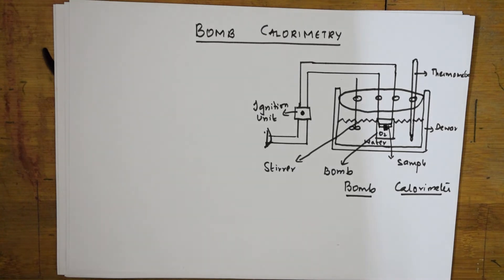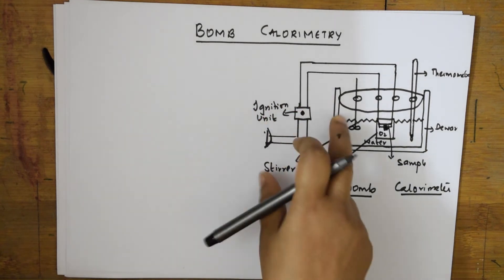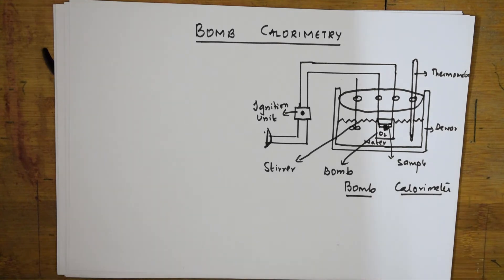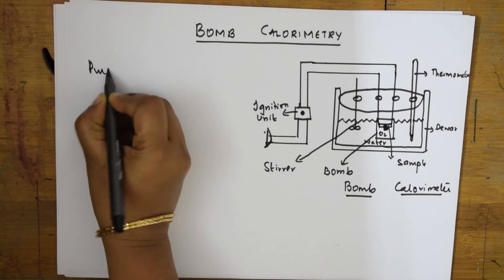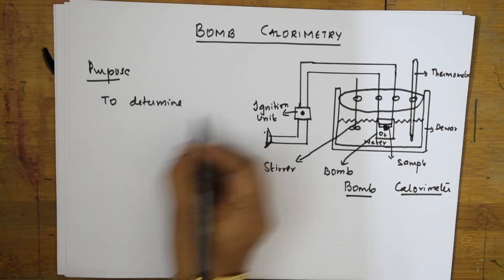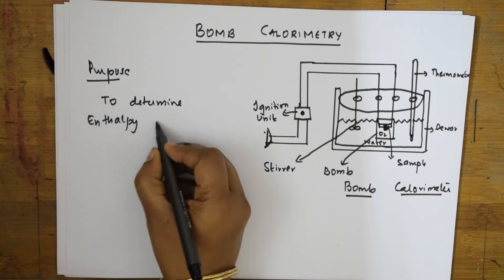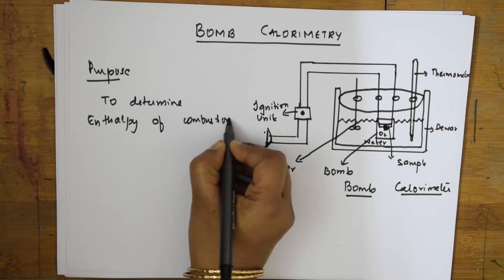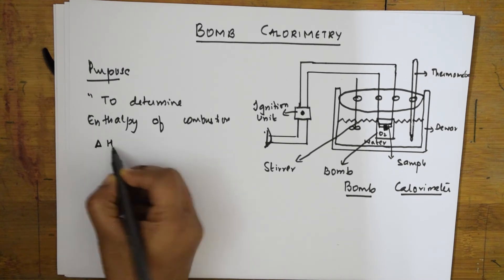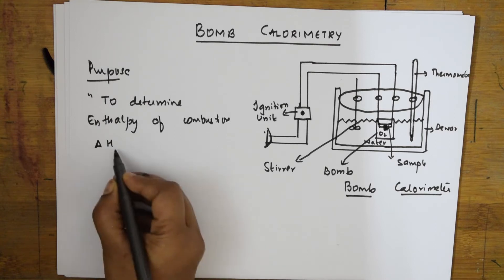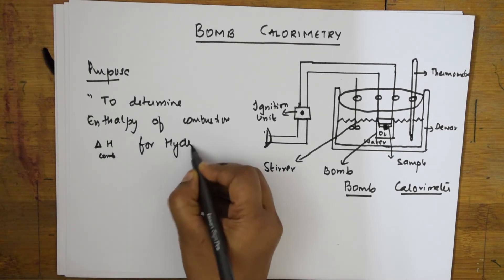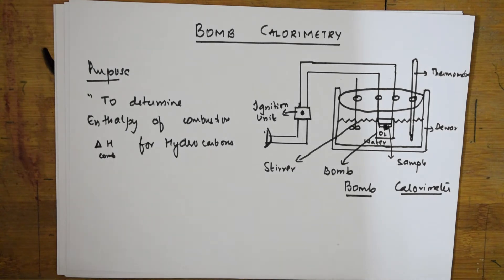Why are we performing this bomb calorimetry experiment? We are going to use bomb calorimetry basically to determine enthalpy of combustion. The purpose is to determine enthalpy of combustion, denoted by ΔH_combustion. This is for hydrocarbons — this is the basic idea for usage of bomb calorimetry, which is prescribed for your syllabus.